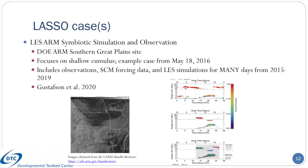Another included case that relies on DOE ARM data is the LASSO case, which stands for the LES ARM Symbiotic Simulation and Observation. It uses the ARM SGP Supersite observational platforms, with the included case focusing on shallow continental cumulus. The case from May 18, 2016 was arbitrarily chosen for example purposes. One of the great things about this program is that they not only provide forcing and initial conditions for SCMs, but also provide observation data and LES simulations for every case for comparison. To date, many cases are available from 2015 through 2019, and the program is described by Gustafson and co-authors in their 2020 paper.